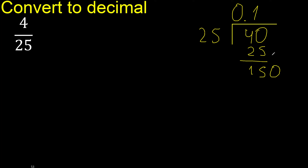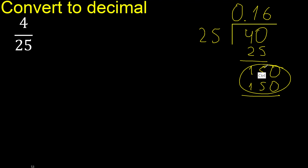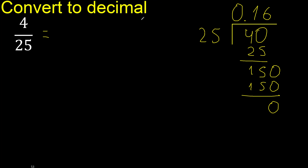Always complete with 0. The point is here. 25 multiplied by what number? Multiplied by 6 is 150 — exact. Subtract: the remainder is 0, therefore finish.